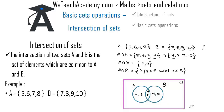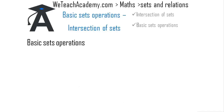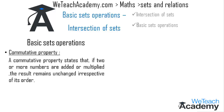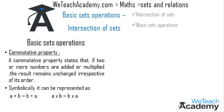Now let us discuss the commutative property. The commutative property states that if two or more numbers are added or multiplied, the result remains unchanged irrespective of order. Symbolically: A + B = B + A in addition, and A × B = B × A in multiplication. Let us explain this concept in set theory with an example.